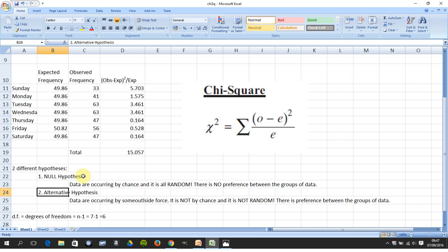So for this question then, the null hypothesis and the alternative hypothesis is always the same. Null hypothesis: everything occurs by chance. Alternative hypothesis: there is some outside force.